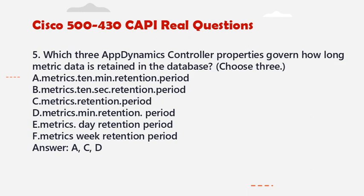Question 5: Which three AppDynamics controller properties govern how long metric data is retained in the database? Choose three. A. Metrics.10.min.Retention.Period. B. Metrics.10.sec.Retention.Period. C. Metrics.Retention.Period. D. Metrics.min.Retention.Period. E. Metrics.Day.Retention.Period. F. Metrics.Week.Retention.Period. Answer: A, C, D.